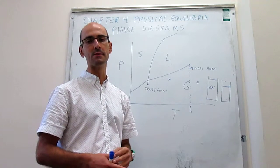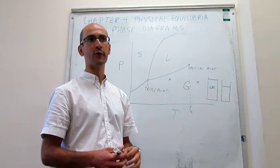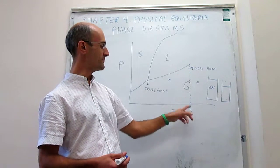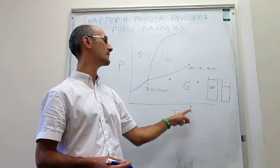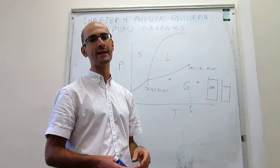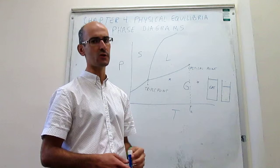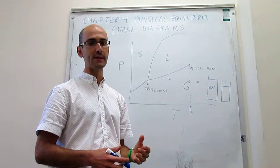The critical point also changes from substance to substance. For example, for water, the temperature of the critical point will be about 647 Kelvin, which is very high. And the pressure will be about 218 atmospheres, which is also quite high.